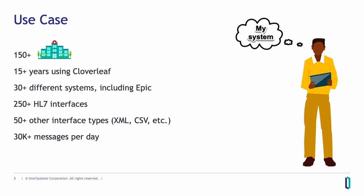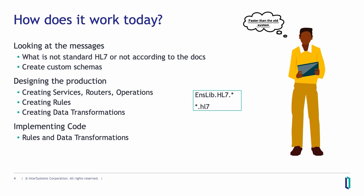So how does it work today when you are creating a production? First, you have to look at all your messages — are they according to the standard, or is something wrong? If that's the case, you have to create some custom schemas, then create the production, the services, routers, operations, and so on — create rules, data transformations, and after that implement some code in the rules and data transformations.